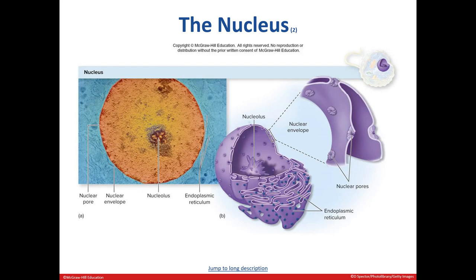In this figure, we can see the large nucleus, which is stained orange, along with the darkly stained nucleolus in the center. You can also see the nuclear envelope along with the pores.